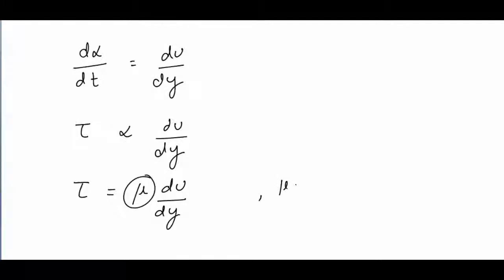Now, rate of shear strain D alpha by Dt geometrically comes out to be equal to du by dy. So from here, I can write that shear stress tau is directly proportional to du by dy. And to remove the proportionality, I put a constant. This constant mu is known as dynamic viscosity.